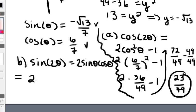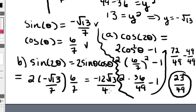It's equal to 2 times the negative square root of 13 over 7 times 6 over 7. And that's equal to negative 12 square roots of 13 all over 49. There is the sine of 2 theta.